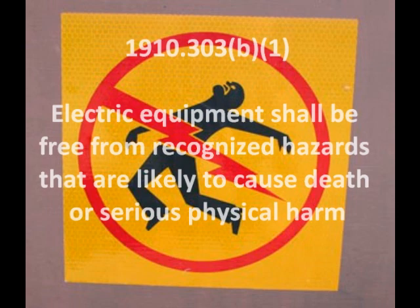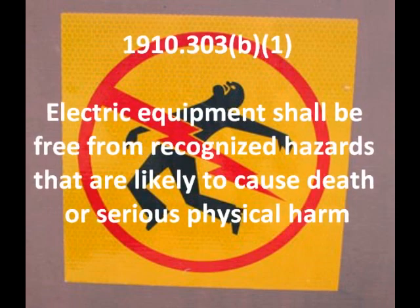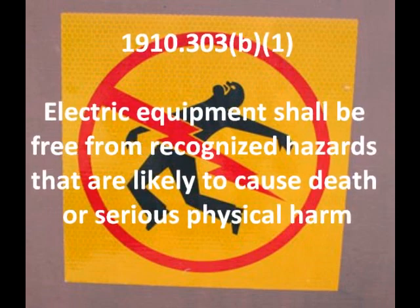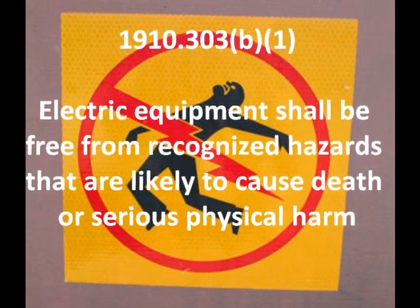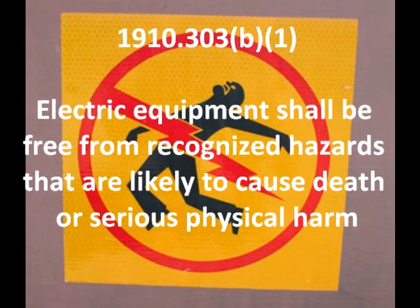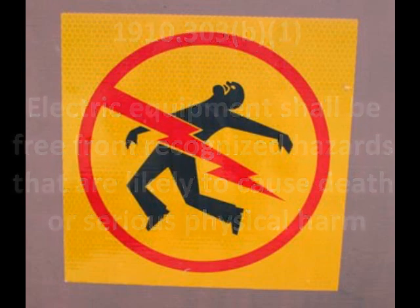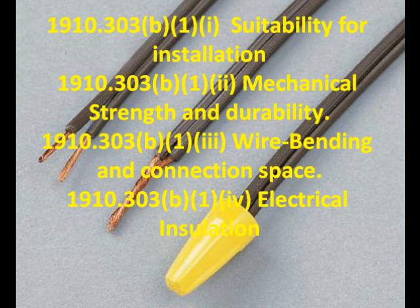In the first sub-part, we will be discussing electrical equipment and the standards that evaluate it. Under general requirements, it is stated that electric equipment shall be free from recognized hazards that are likely to cause death or serious physical harm. Predicting hazards before they come up is a major key, and safety equipment is always necessary.